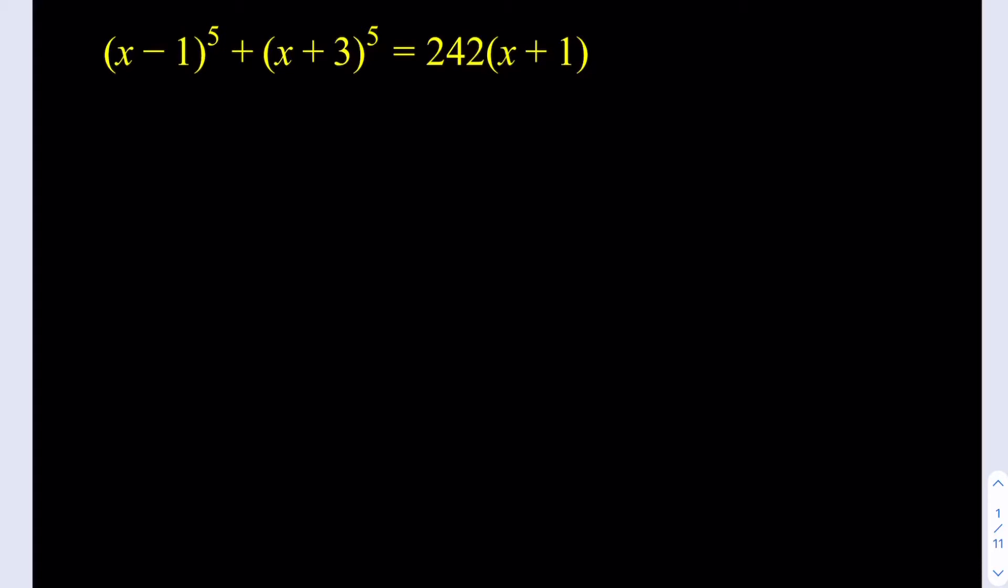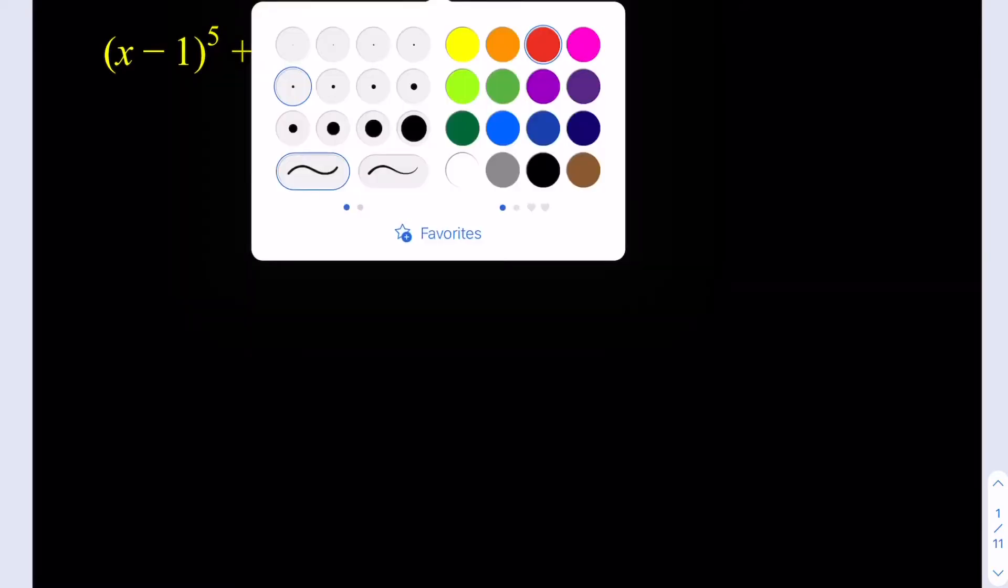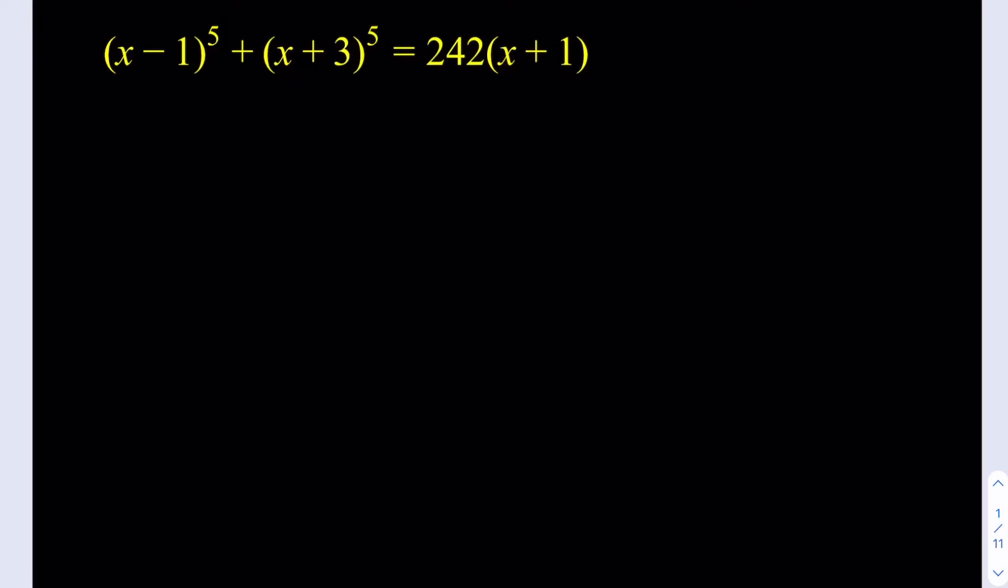So what do we do? We're going to be using some interesting techniques, some algebra manipulations to make this problem easier. We're going to be taking advantage of symmetry in other words. If you look at the left hand side, you're going to notice that we have x-1 and x+3. So if I go ahead and take those two expressions and average them, I'm going to show you, you'll understand why we're averaging them in a little bit.